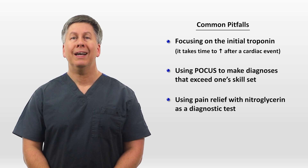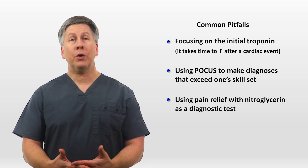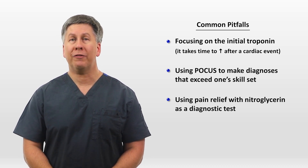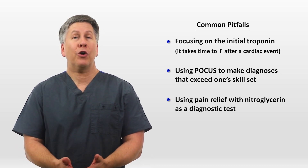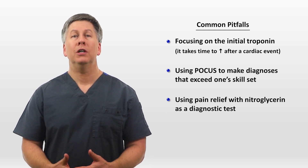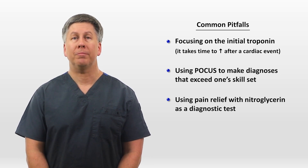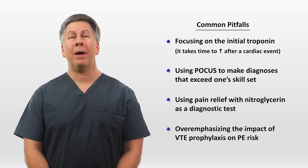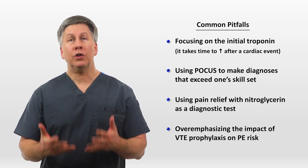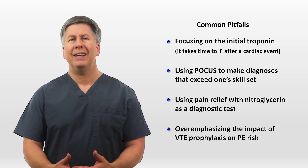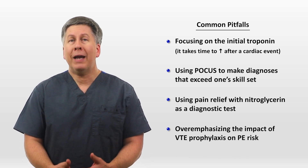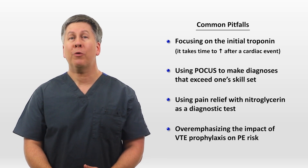Third, using pain relief with nitroglycerin as a diagnostic test. Studies show that pain relief with nitroglycerin among ER patients actually lowers the probability the pain was from a myocardial infarction. This doesn't mean you shouldn't try it — at the very least it might make the patient feel better — but the probability of ACS is not diminished just because nitro has no effect. Last, don't overemphasize VTE prophylaxis on the probability of PE. While prophylaxis does lower the probability, it's not a profound difference — the majority of patients who develop PEs in the hospital will have been on prophylaxis at the time.